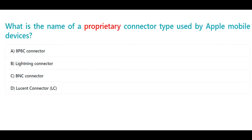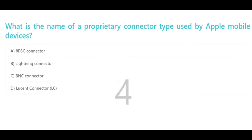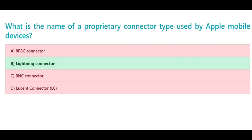What is the name of a proprietary connector type used by Apple mobile devices? A. APHC connector, B. Lightning connector, C. BNC connector, D. Lucent connector (LC). The correct answer is B. Lightning connector.